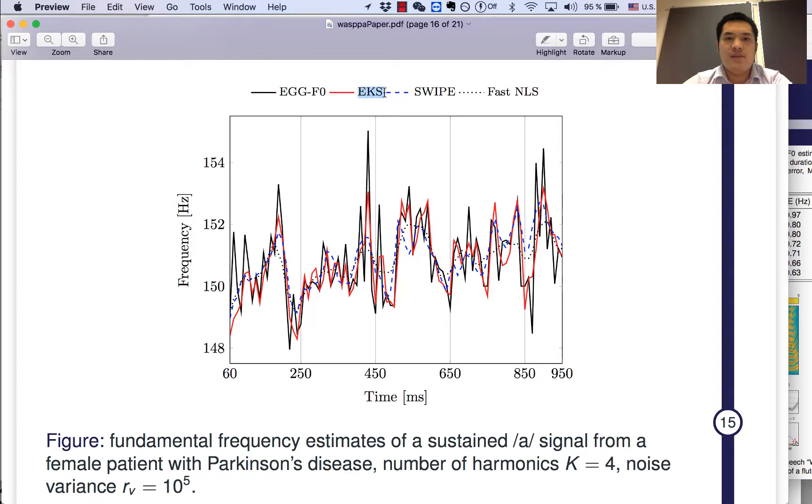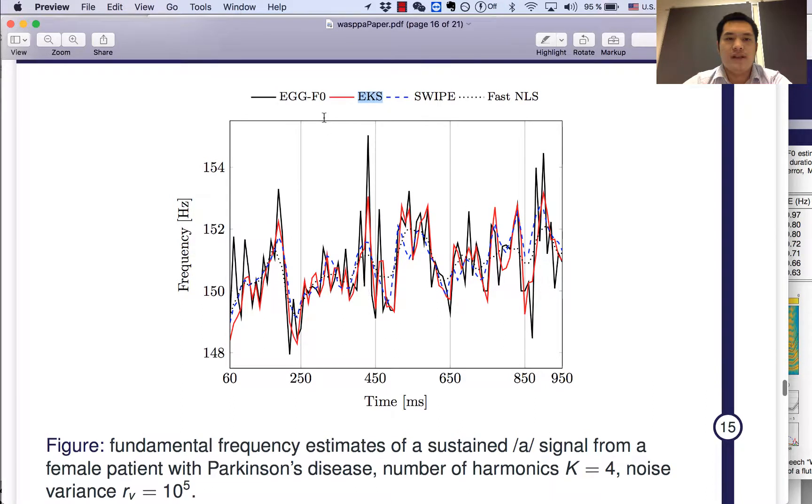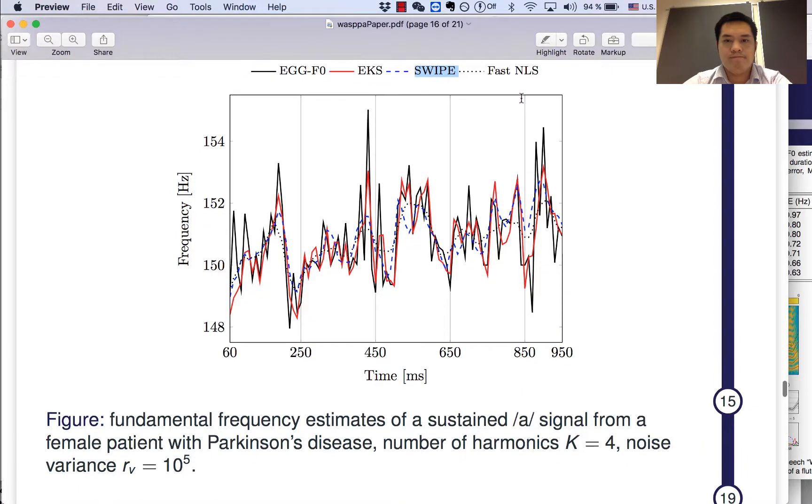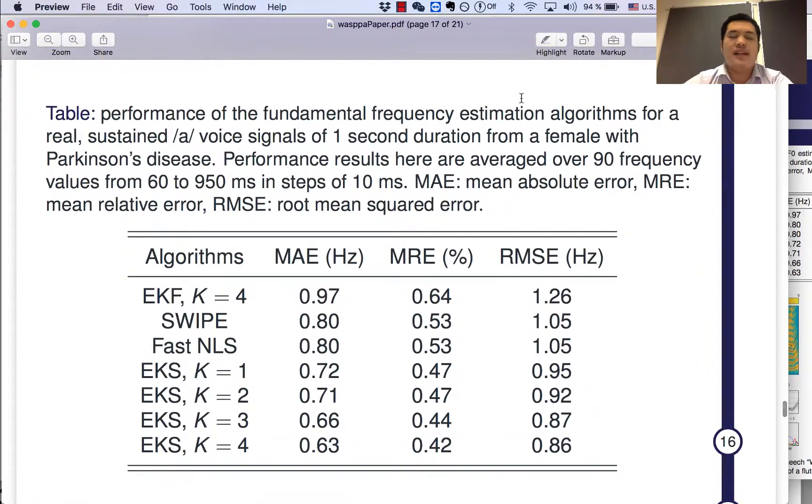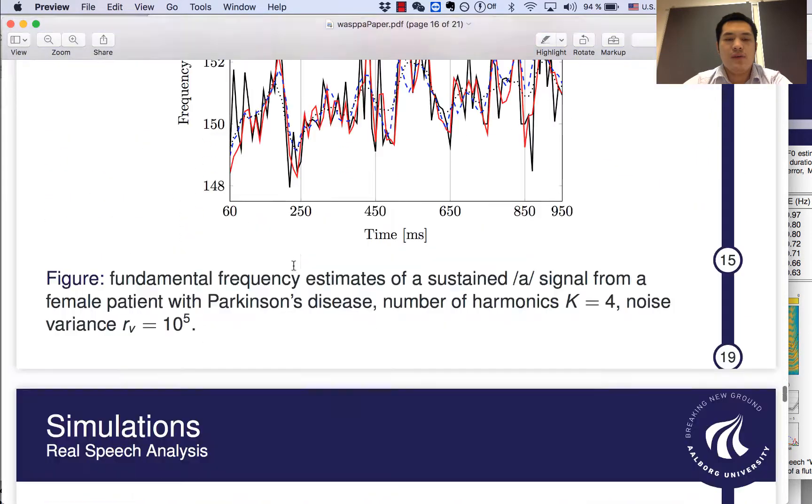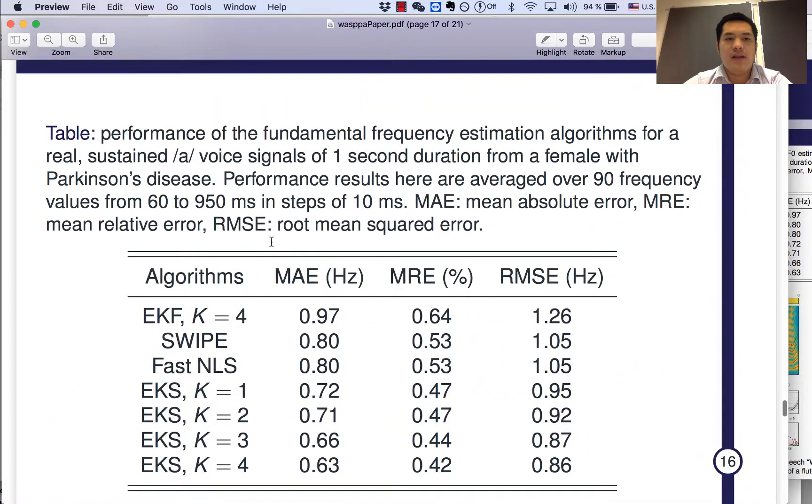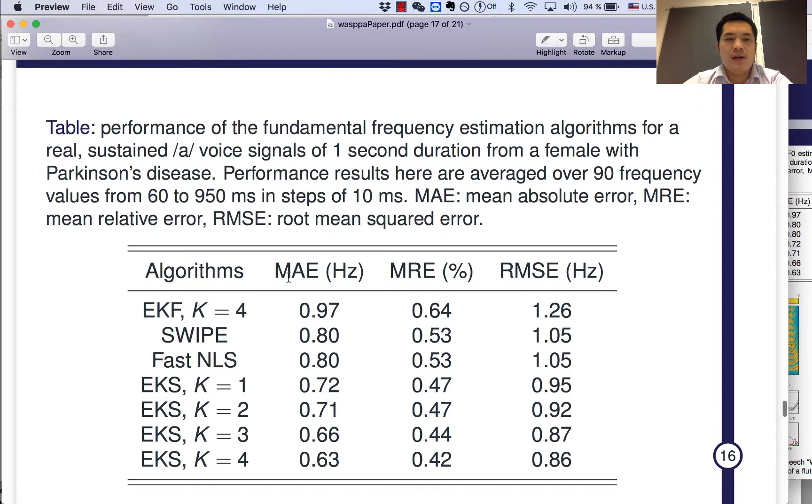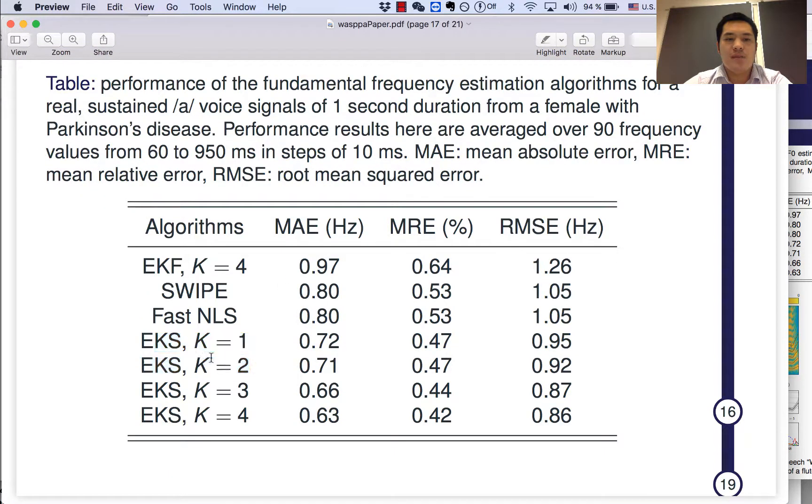As you can see here, our extended Kalman smoother method is much closer to the EGG fundamental frequency estimates than the well-known swipe method and the fast nonlinear least squares method. And we also have quantized the results as follows. As you can see, we use the EGG fundamental frequency estimates as the baseline. And then we calculate the mean absolute error, mean relative error, and root mean square error. As you can see that for extended Kalman smoother, it's much better than the state-of-the-art method.